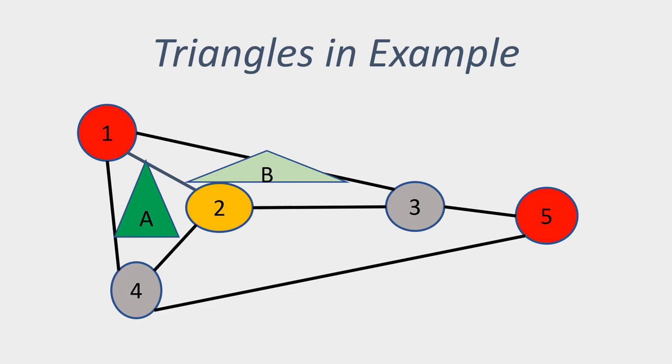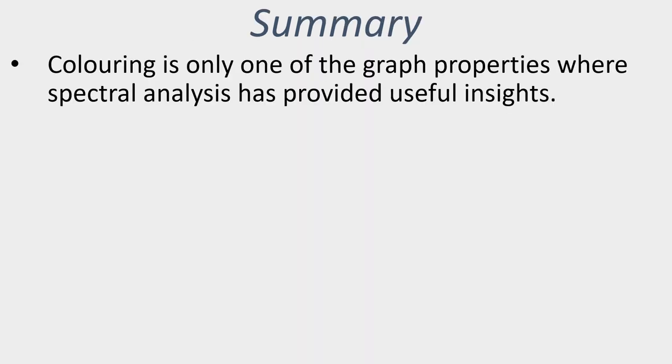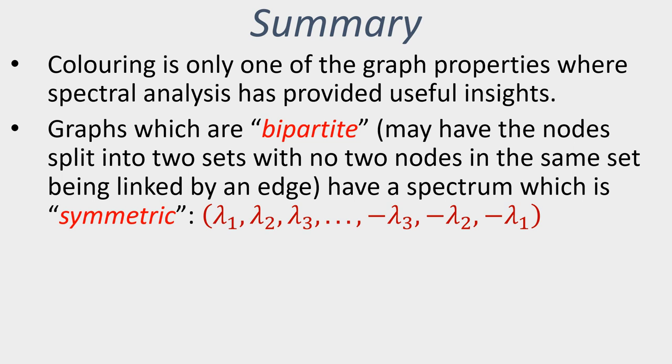So just to summarise what we've seen: colouring is only one of the graph properties where spectral analysis has provided some very useful insights. If we take the case of graphs which are bipartite—and that means the set of nodes in the graph can be split into two sets with no edges in the graph connecting nodes in one set to nodes in the same set—then the spectrum for that type of graph has this kind of symmetry property. If we look at the eigenvalues, then the first half is exactly the negation of the second half.